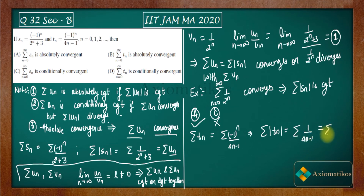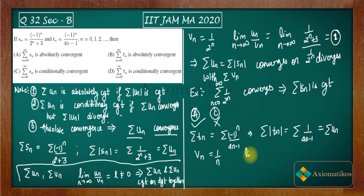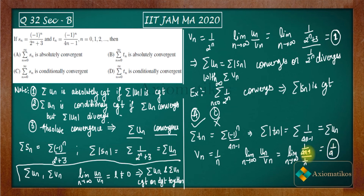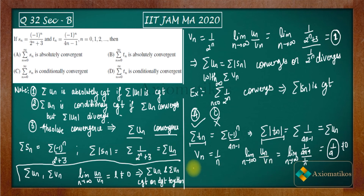Let us name it again as summation Un. I will take Vn equal to one by n. If Vn is one by n and Un is one by 4n minus 1, then the limit as n goes to infinity of Un by Vn is one by 4n minus 1 over one by n, which equals one by four. This is a non-zero finite number, so by the limit comparison test, summation mod Tn converges or diverges together with summation one by n.